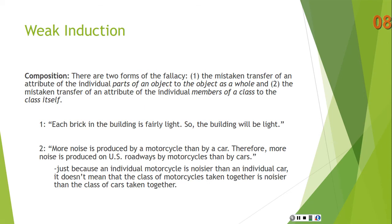Then there's the fallacy of composition, which has two forms. One is the mistaken transfer of an attribute of the individual parts of an object to the object as a whole. Two is the mistaken transfer of an attribute of individual members of a class to the class itself. With the first one, you're saying the parts of an object have a property, therefore the whole object will have that property.